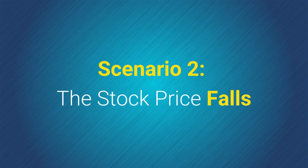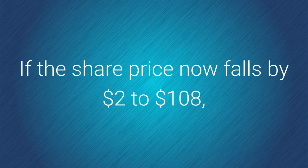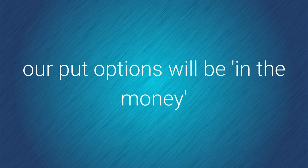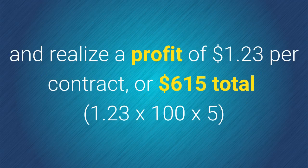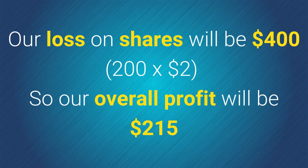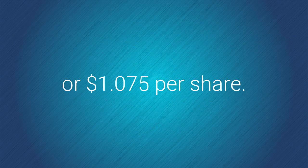Now let's look at another scenario where the stock price falls. If the share price falls by $2 to $108, our put options will be in the money and increase in value to $2.14 with a delta of negative 0.73, realising a profit of $1.23 per contract, or $615 total profit — that is, $1.23 times 100 times 5. Our loss on the shares will be $400, that is 200 shares times a $2 loss per share. So our overall profit will be $215, or $1.075 per share.